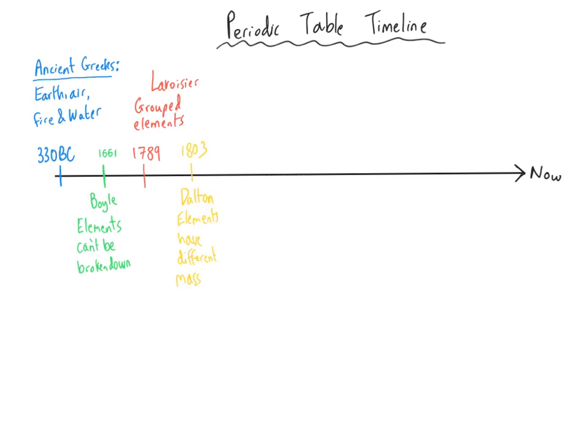Next was a scientist called John Dalton, and in 1803 he came up with the idea that elements are made up of indivisible atoms, and that atoms of different elements have different masses — that should ring a bell from your atomic structure work. After that, a Swedish chemist called Baron Jöns Jacob Berzelius built on the work of the previous scientists and started listing the atomic weights of different elements and giving each element a different letter, which we would later come to know as symbols.